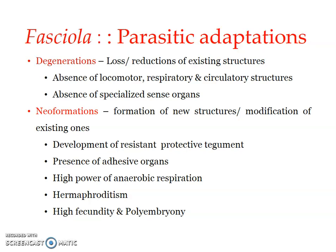Similarly, free molecular oxygen is not available in the liver — it is an anaerobic condition there — so Fasciola doesn't need any respiratory structure. Regarding the circulatory system, nutrients are distributed through the branching alimentary canal directly to various places, so it doesn't have any separate circulatory system.